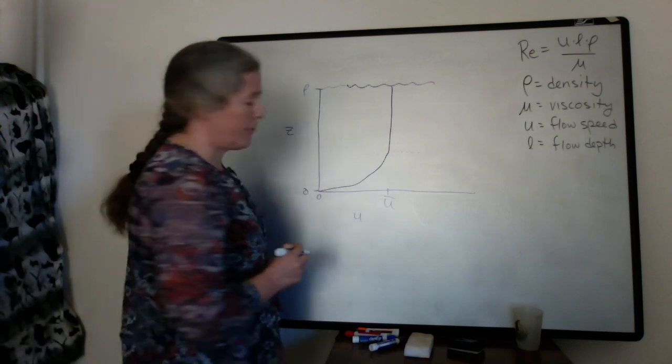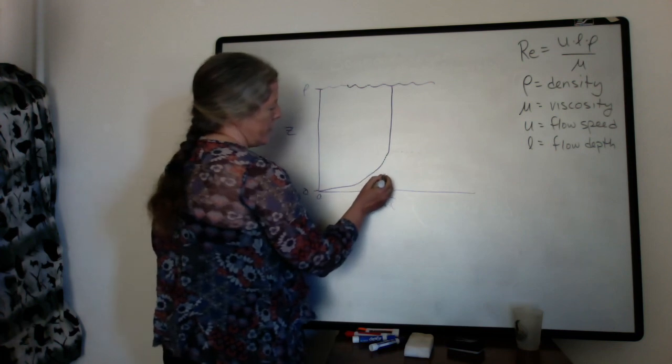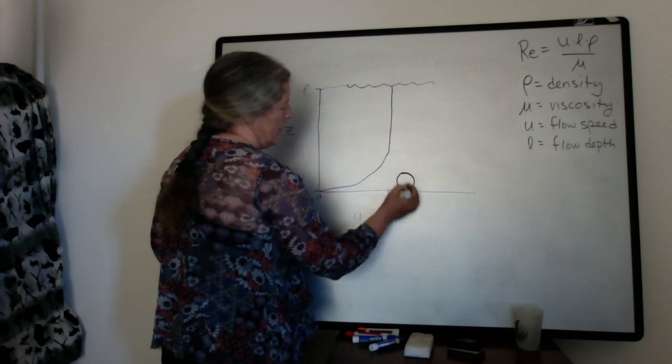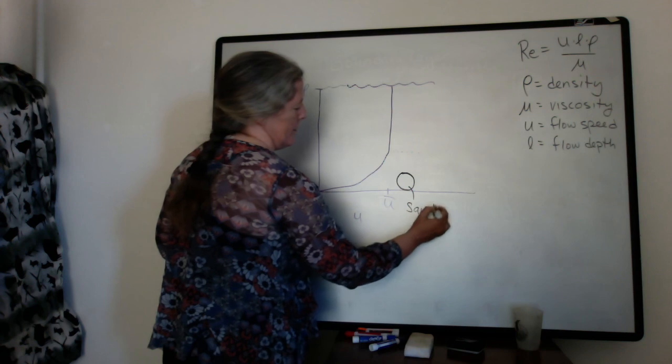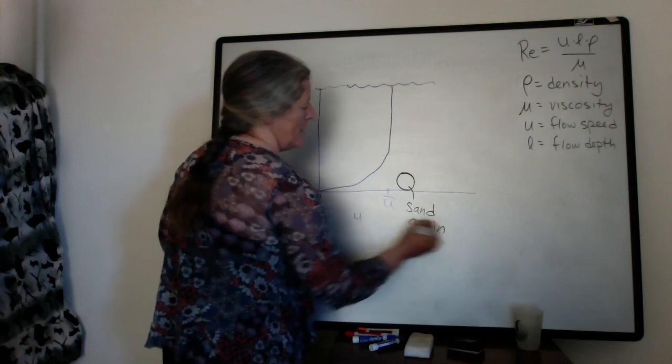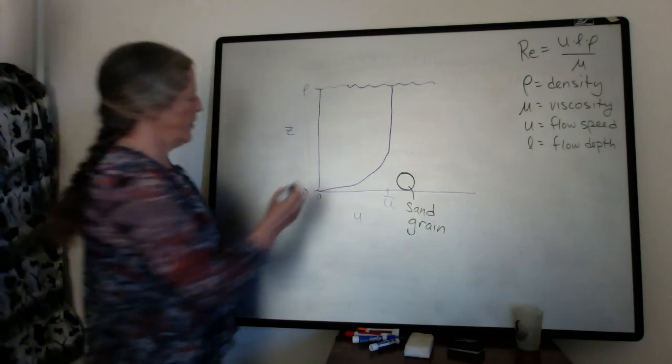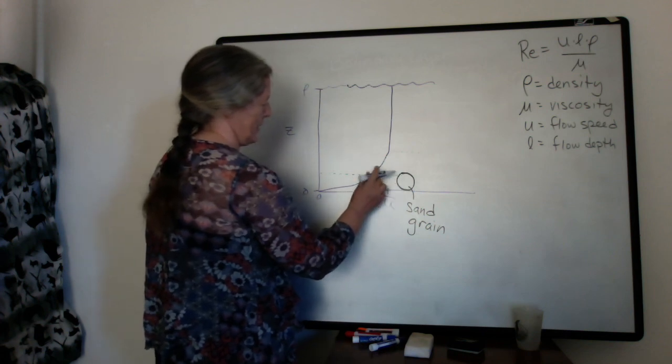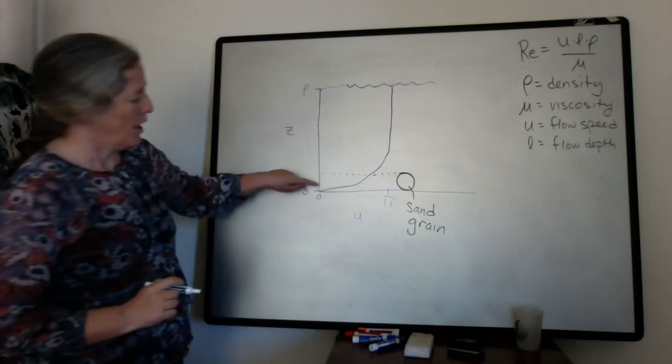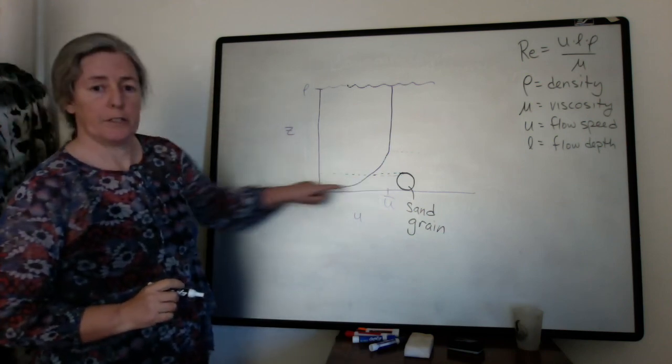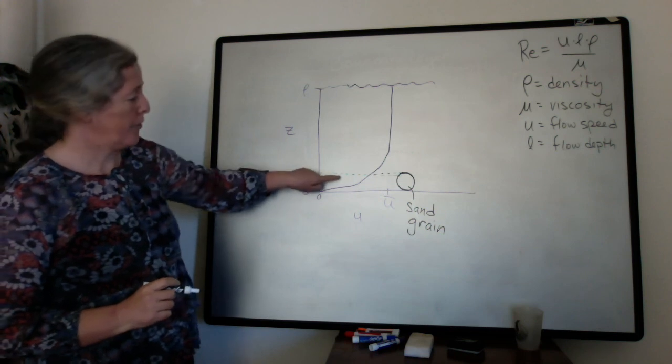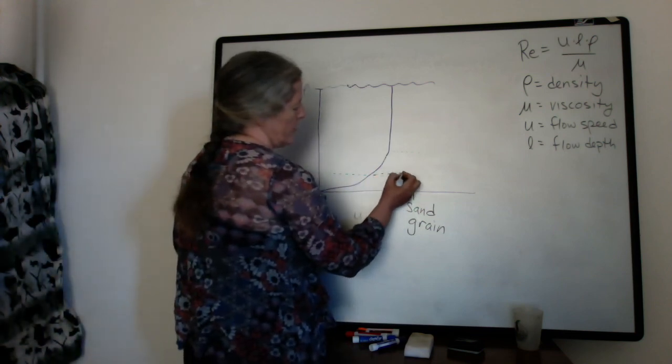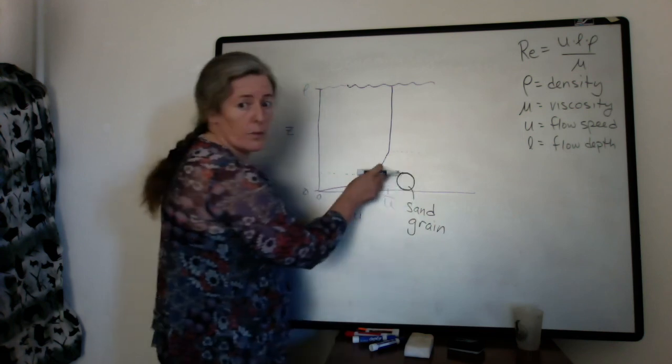So this is if you have a flat bed. So let's put a fairly large grain on our bed here. So this is a sand grain. And one of the things that if you notice, so this is the diameter of our grain up here. I'm going to draw that. The flow speed that the bottom of the grain experiences is zero, and the flow speed that the top of the grain experiences is significantly higher.